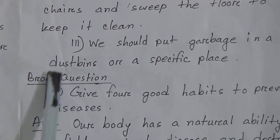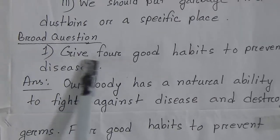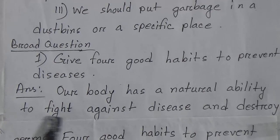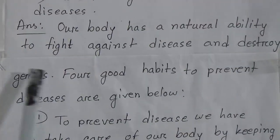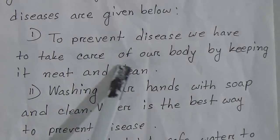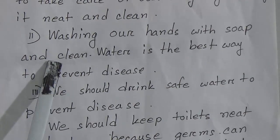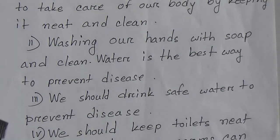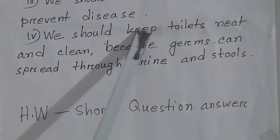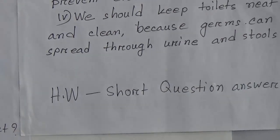Now the broad question: give four good habits to prevent diseases. Our body has a natural ability to fight against disease and destroy germs. Four good habits to prevent diseases: one, keep our body neat and clean; two, wash hands with soap and clean water; three, use safe water to prevent disease; four, keep toilets neat and clean because germs can spread through urine and stools.